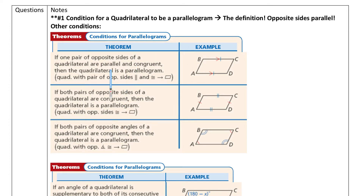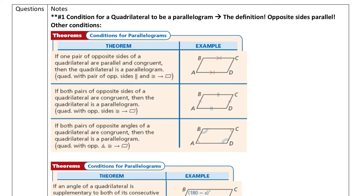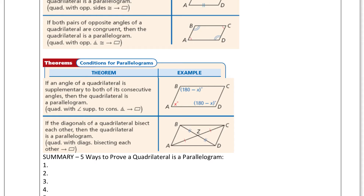These are the other characteristics — theorems. If we have one pair of opposite sides that are parallel and congruent, then we know it's a parallelogram. If we have both pairs of opposite sides congruent, then we know it's a parallelogram. If we have both pairs of opposite angles congruent, then we know it's a parallelogram. If we can show that the consecutive angles are supplementary, then we know the quadrilateral is a parallelogram. And finally, if we can show that the diagonals bisect each other, then we know that it's a parallelogram.